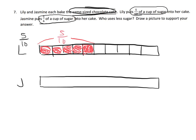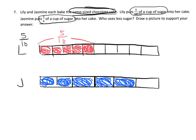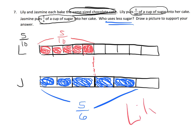For Jasmine, five-sixths of a cup means we cut her tape diagram into six pieces — begin by cutting it in half and then cut each half into three pieces. Jasmine used five-sixths, so we shade one-sixth, two-sixths, three-sixths, four-sixths, five-sixths. The question is who used less sugar, and we can see that Lily clearly used less sugar than Jasmine.